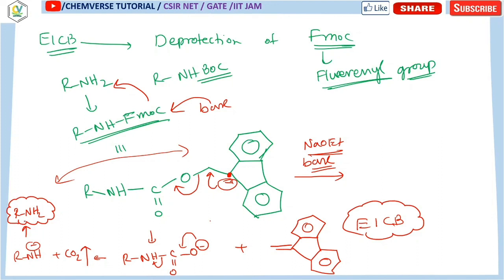So this is the basic E1cb reaction mechanism. I think this is sufficient for exam preparation. We have discussed the E1, E2, and E1cb reaction mechanisms. In my previous video I discussed SN1, SN2, and SNi, completing the important topics of substitution and elimination reactions. In the next video I will be discussing NGP, which is very important from the NET and GATE point of view. That's all for today — thank you, happy learning.